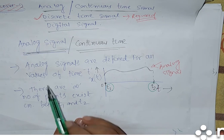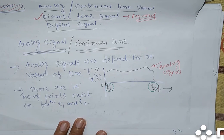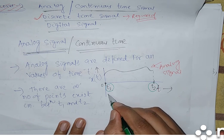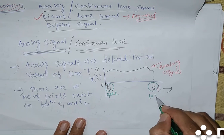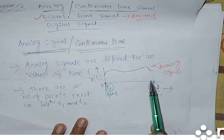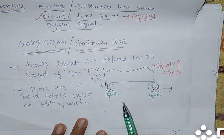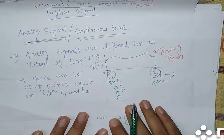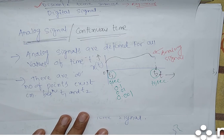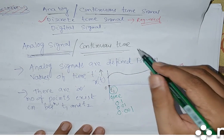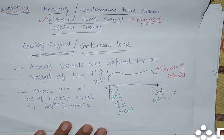Our definition: this is a continuous time signal defined for all values of time. You take any two intervals — for example, T1 is 0 seconds and T2 is 10 seconds. In this interval 0 to 10 seconds, we can define the signal for any value of time. How many values are present between 0 and 10? There are infinite number of values. Even between 0.0 and 0.1, there are infinite number of points. So for analog signal or continuous time signal, between any two intervals there are infinite number of points.